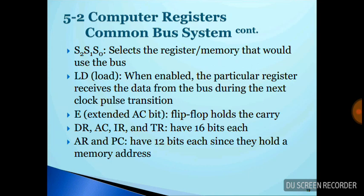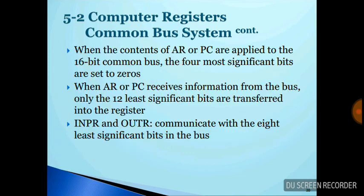DR, AC, IR, and TR are 16-bit registers, while AR and PC are 12-bit each since they hold memory addresses. When the content of AR or PC is applied to the 16-bit common bus, the four most significant bits are set to zero. When AR or PC receive information from the bus, only the 12 least significant bits are transferred. INPR and OUTR communicate with the 8 least significant bits of the bus.